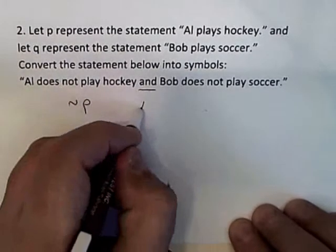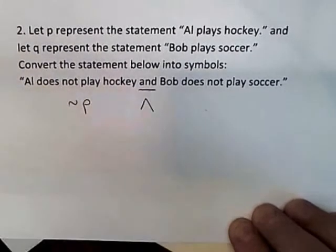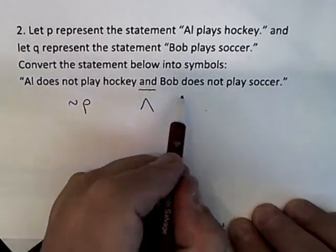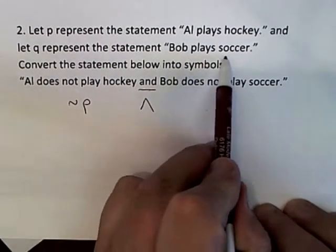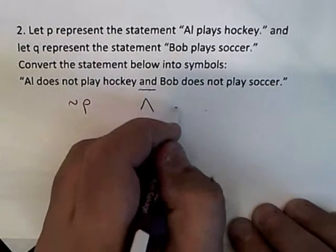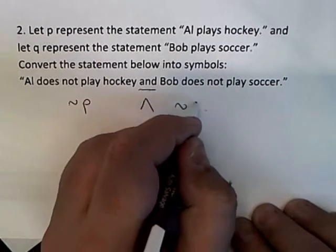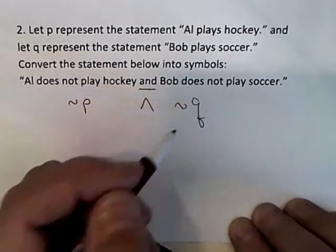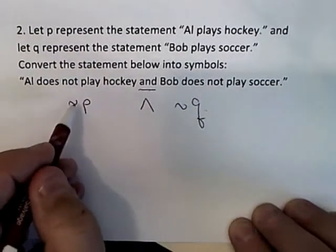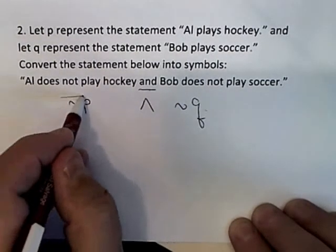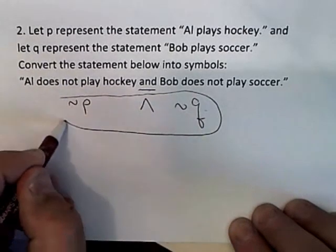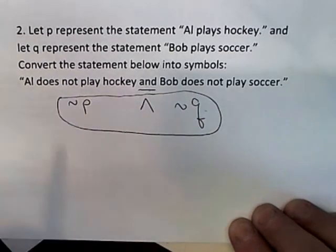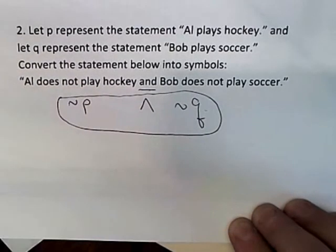And then we've got the 'and,' and the symbol for 'and' is that. Then 'Bob does not play soccer' — well, 'Bob plays soccer' is Q, so 'does not play soccer' is not Q. So again, don't try to make these simple problems difficult, because they're not.